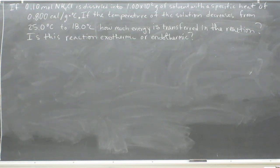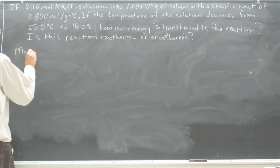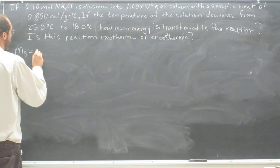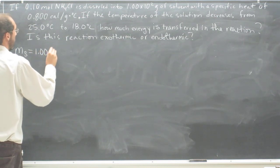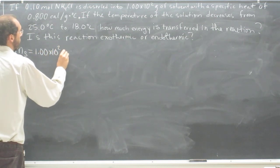Let's go ahead and label all our variables first. The first thing we need to do is find the mass of the solvent, which is going to be 1.00 times 10 squared grams.